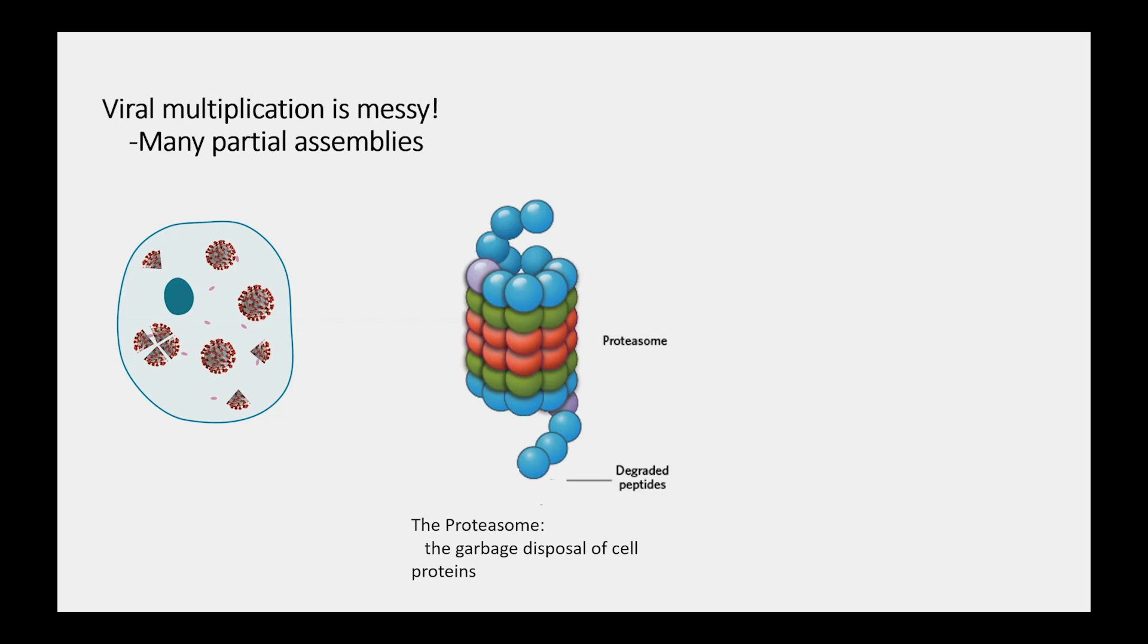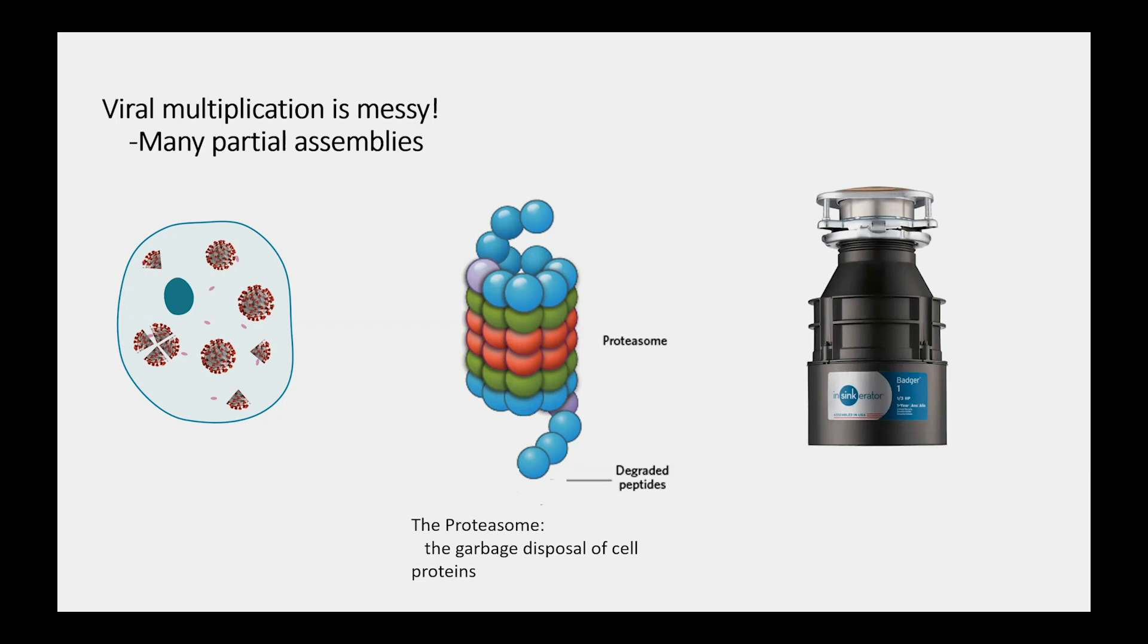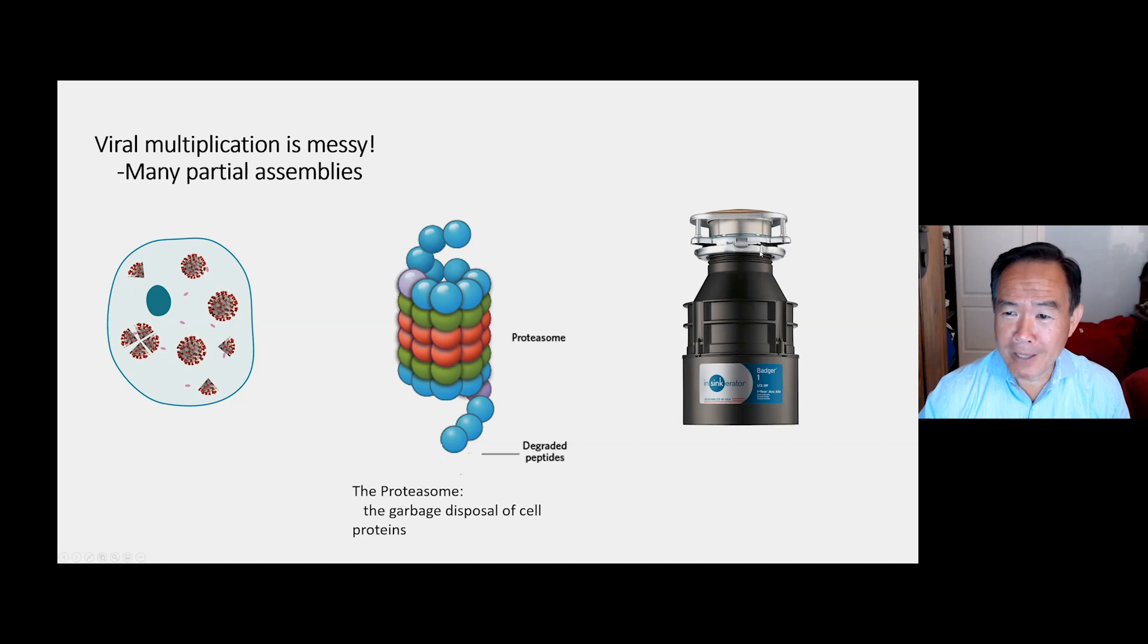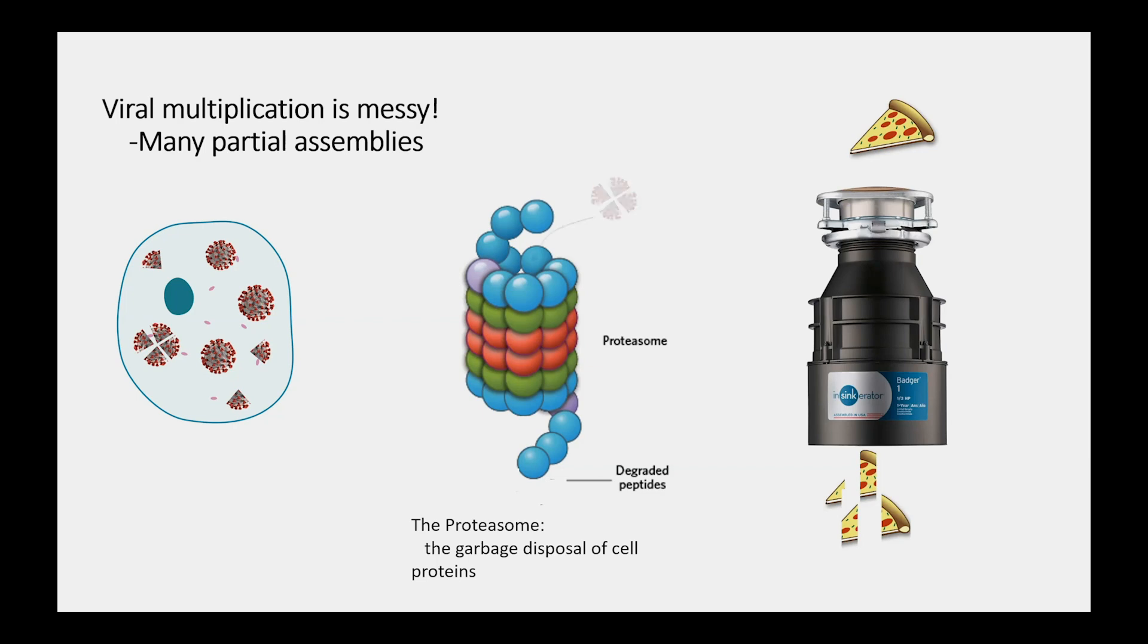This is a molecule within our cell called the proteasome, which degrades or is the garbage disposal of bad cell proteins. Due to COVID-19, I've become an expert in things I don't want to be an expert in. For example, I had to change our garbage disposal. I purposely picked a picture that shows the same orientation as the proteasome. When you toss your pizza into the garbage disposal, it's chopping it up. The same way, when we have a bad protein in the cell, it goes into the top of the proteasome and out comes even smaller proteins, digested short parts called peptides or individual amino acids.